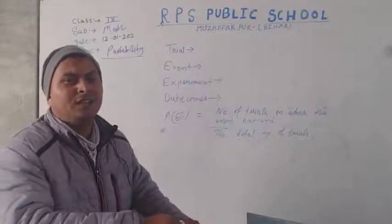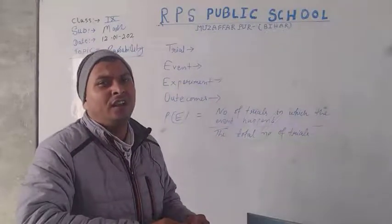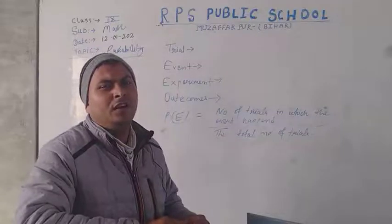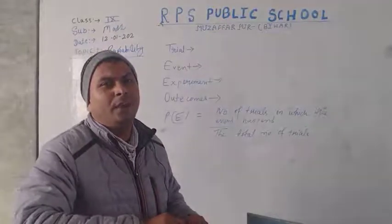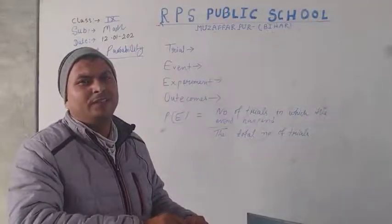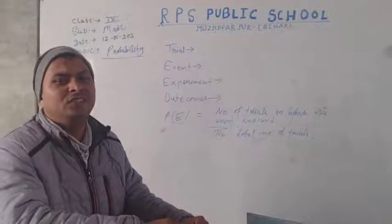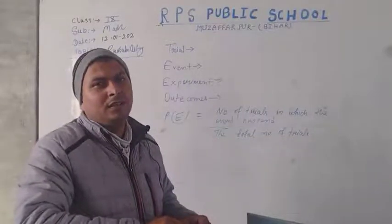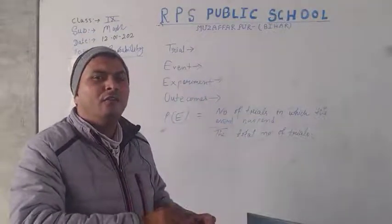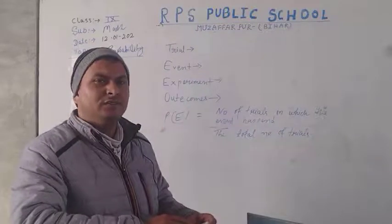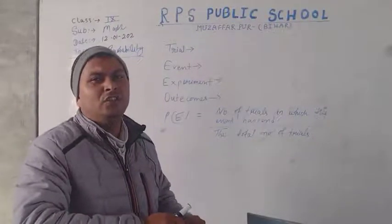Thus, these are the situations of uncertainty in our life. We can only imagine, assume, and predict based on our experience what will happen. And this is probability — the measure of uncertainty of any event. The measure of uncertainty of any event is called probability.